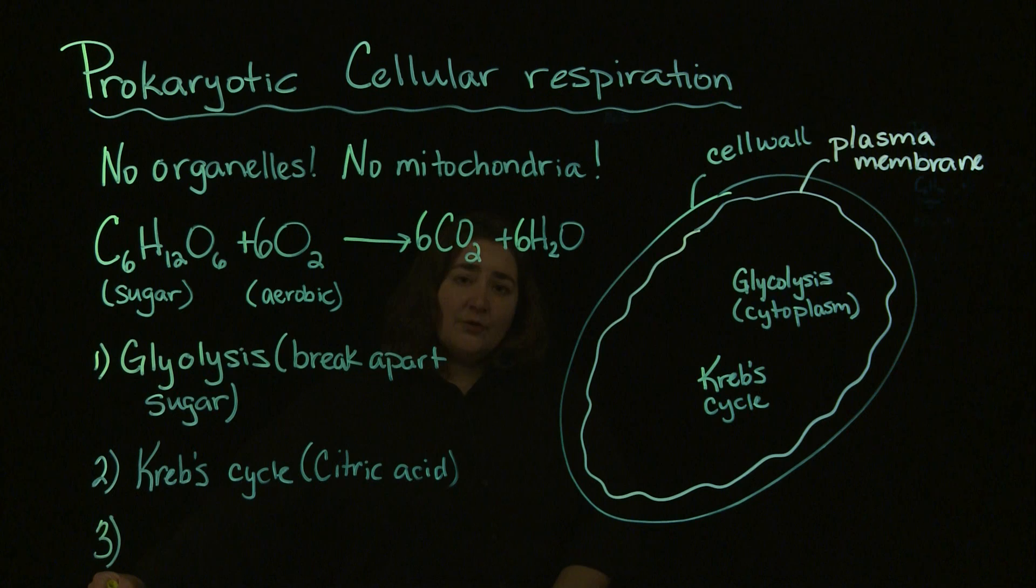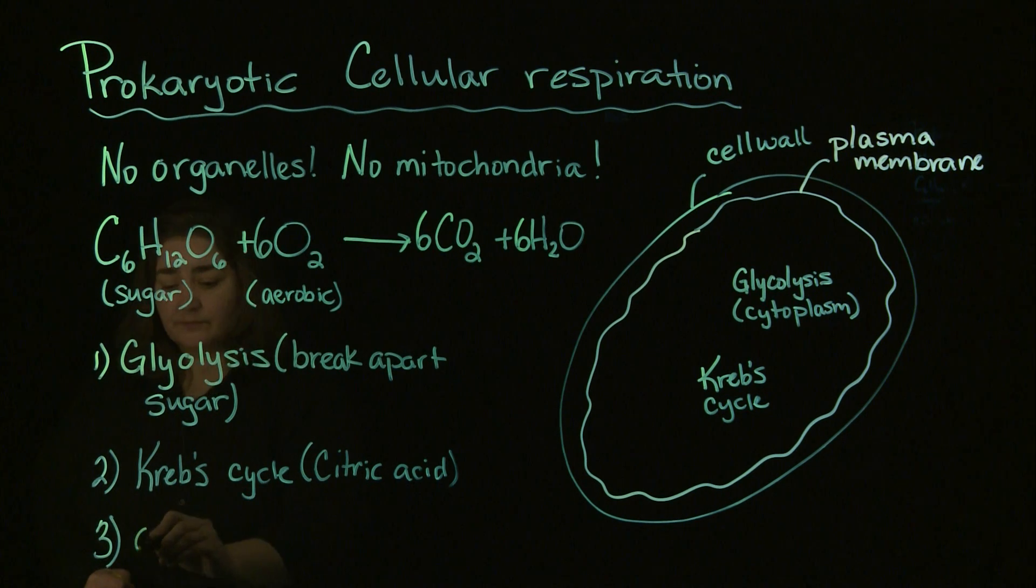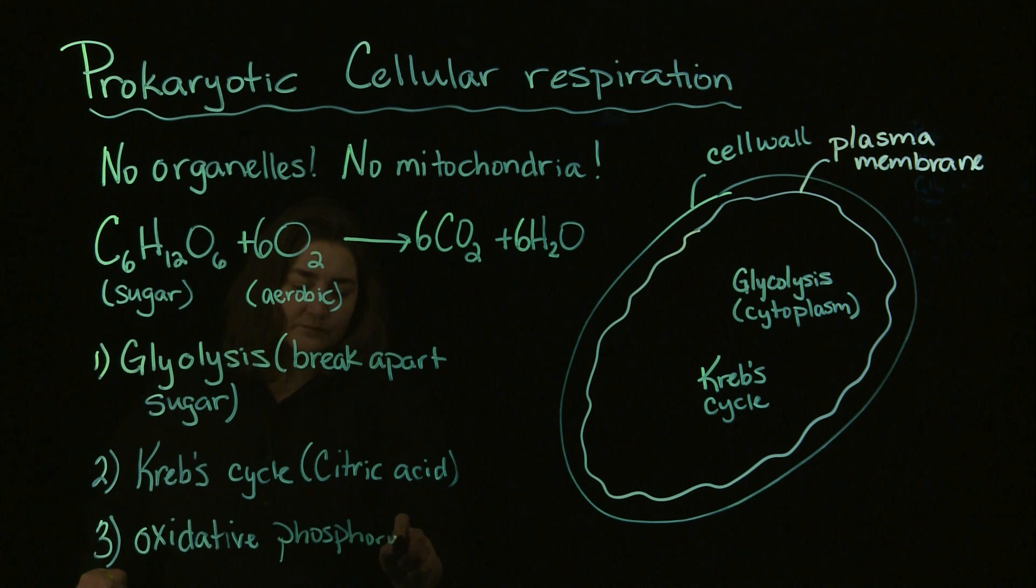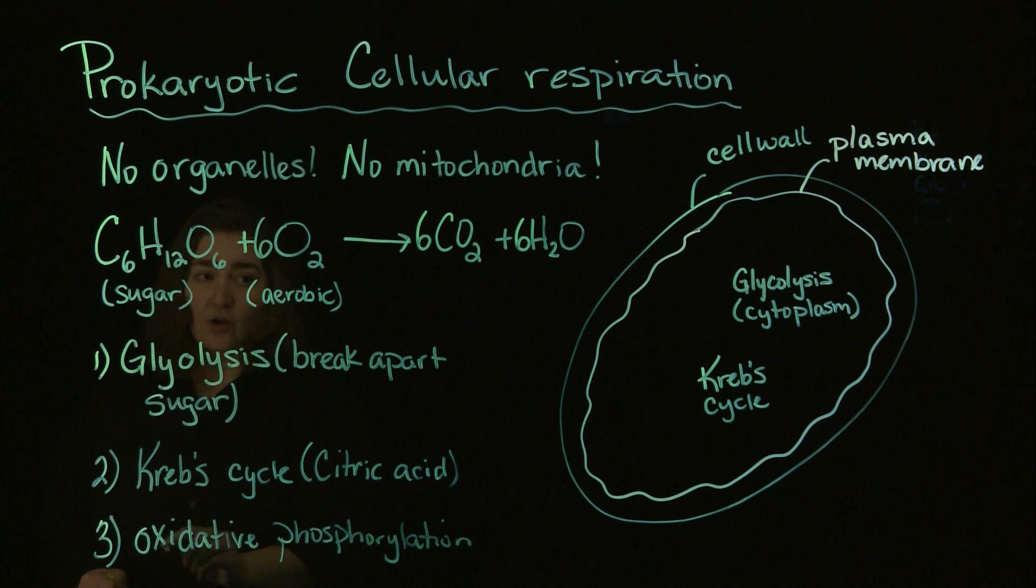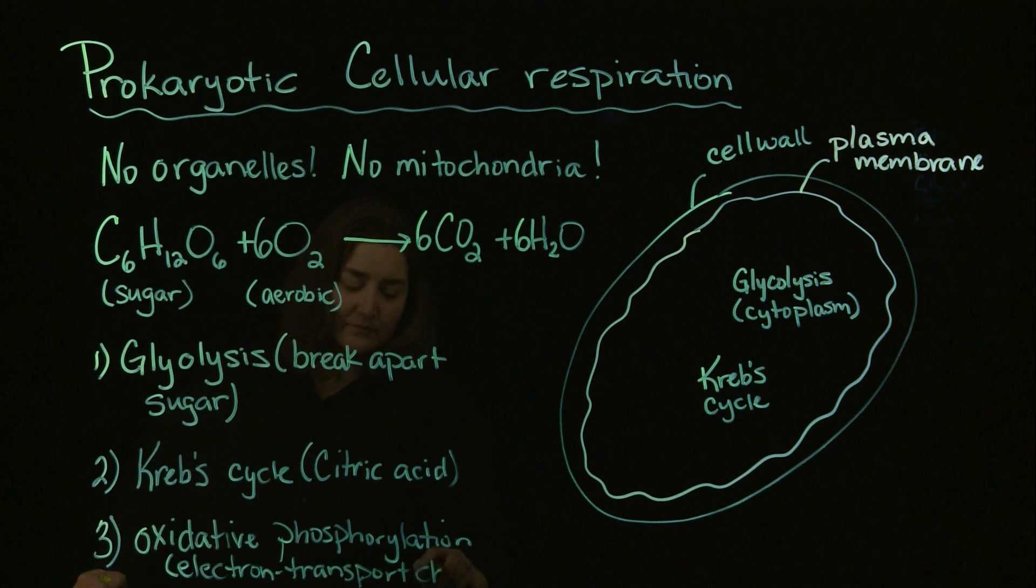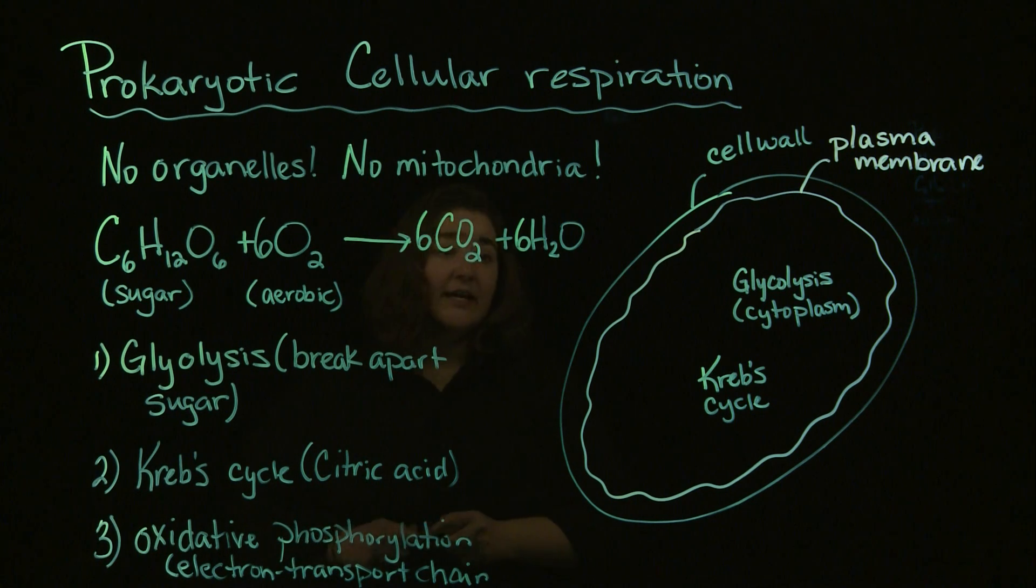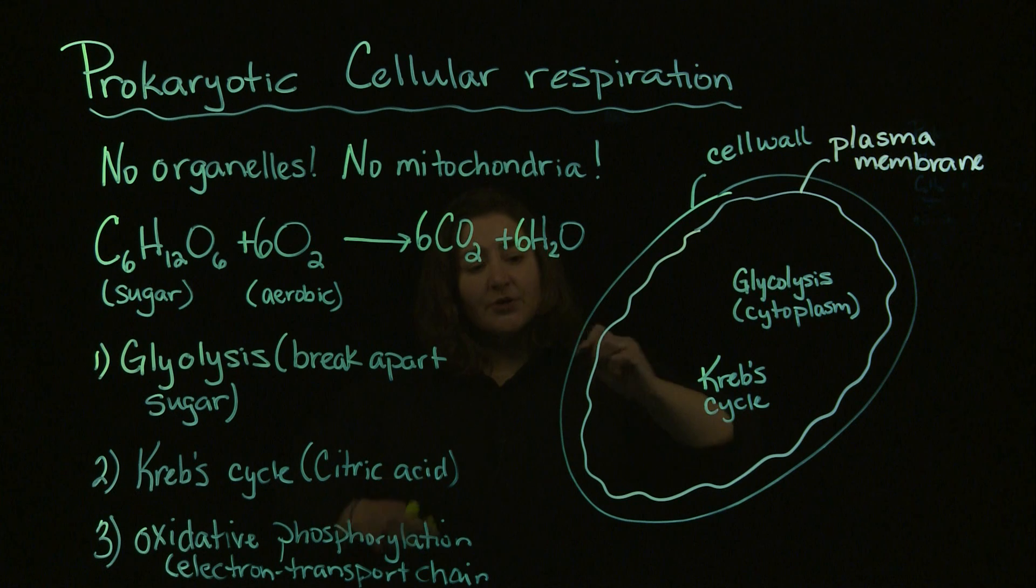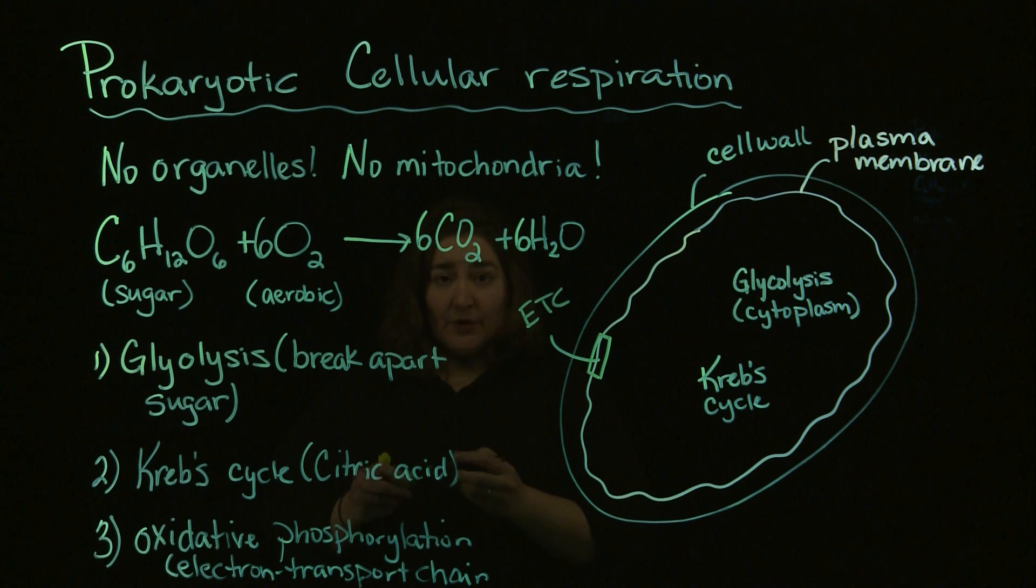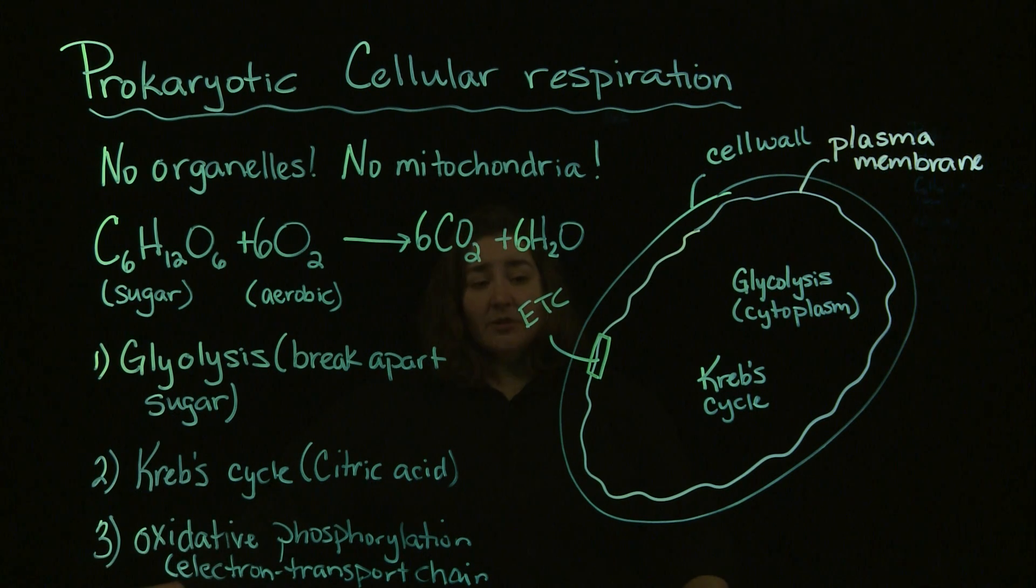And then our last component associated with cellular respiration is going to be oxidative phosphorylation or the electron transport chain. And in terms of the electron transport chain, that electron transport chain is going to be localized within the plasma membrane of our bacteria. So that last part of cellular respiration is going to occur at the bacterial plasma membrane.